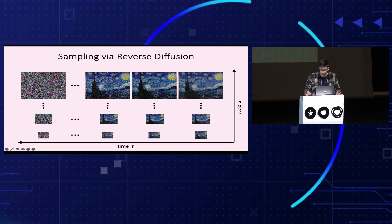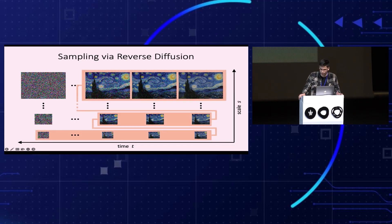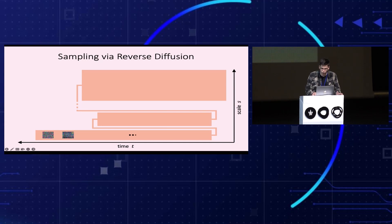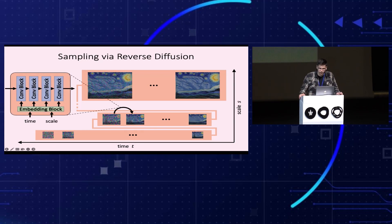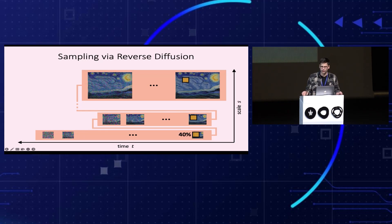This is called the forward diffusion process. Our goal is to learn a reverse diffusion process that follows a path in the time-scale space. During sampling, we start from a new noise map at the coarsest scale and gradually remove noise and upsample the image until we obtain a clean generated image at the finest scale. The diffusion process is driven by a single, fully convolutional model conditioned on both time and scale. Importantly, we don't use attention or downsampling layers, limiting the model's receptive field. We choose image scales such that the receptive field covers 40% of the area of the first scale, allowing the model to generate global structure at the first scale and gradually add details in subsequent scales.